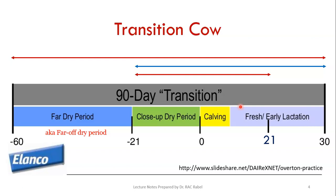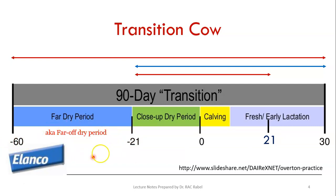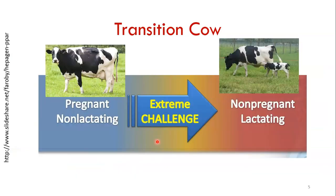When we talk about the dry period, we usually refer to a 60-day dry period, which can be further divided into the far-off dry period and the close-up dry period. The close-up dry period is the last three weeks of gestation, and anything before that last three weeks becomes the far-off dry period. In a 60-day dry period, that leaves almost 40 days of far-off dry period, but if you dried off at only 45 days then there are 25 days of far-off dry period.